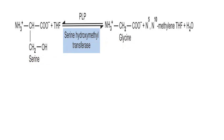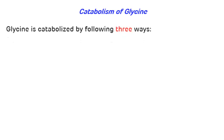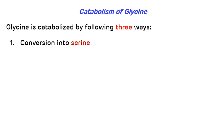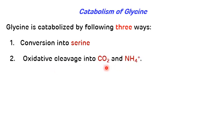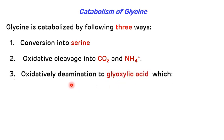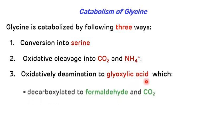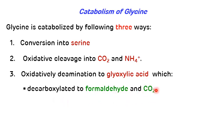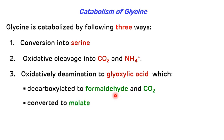Glycine can be catabolized in three ways. First, it gets converted to serine, as already seen. Second, glycine undergoes oxidative cleavage into CO2 and NH4+ with the help of the glycine cleavage system (glycine synthase enzyme). Third, by oxidative deamination to glyoxalic acid. Glyoxalic acid has three fates: it can be decarboxylated to formaldehyde and CO2 (formaldehyde then attaches to THF to form formyl-THF for biosynthetic reactions), it can be converted to malate to enter the TCA cycle, or it can be oxidized to oxalate and excreted.